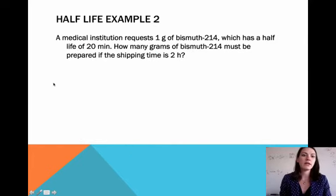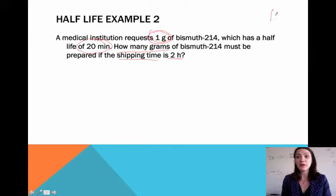Our second example: a medical institution requests one gram of bismuth-214, which has a half-life of 20 minutes. How many grams do we need to prepare if the shipping time is two hours? We need one gram, but we have a period of two hours. So we need to figure out how many half-lives that's going to be.